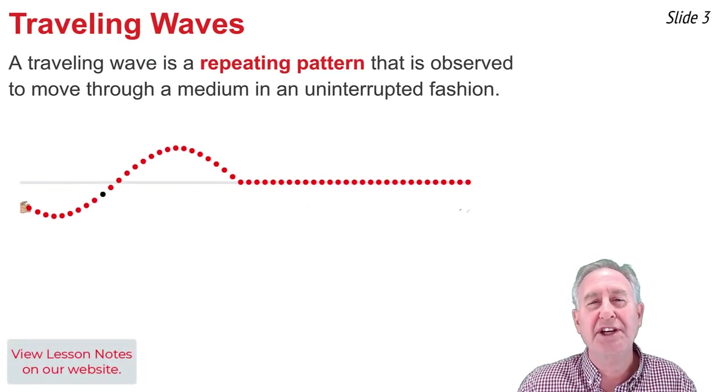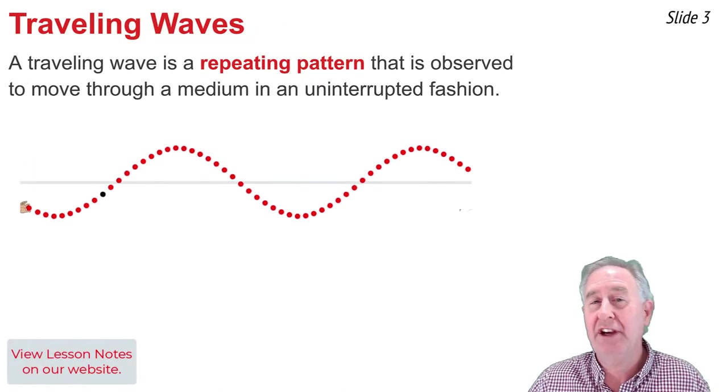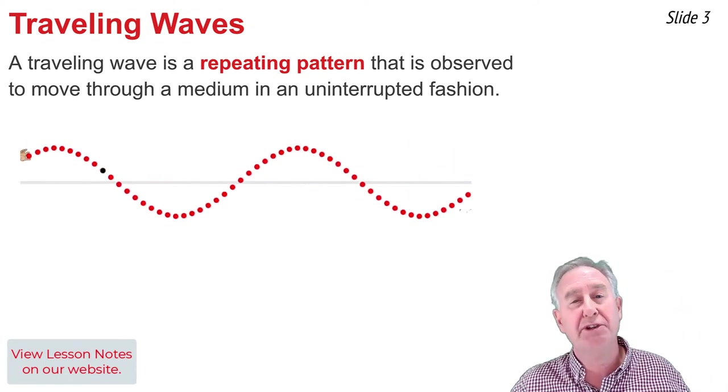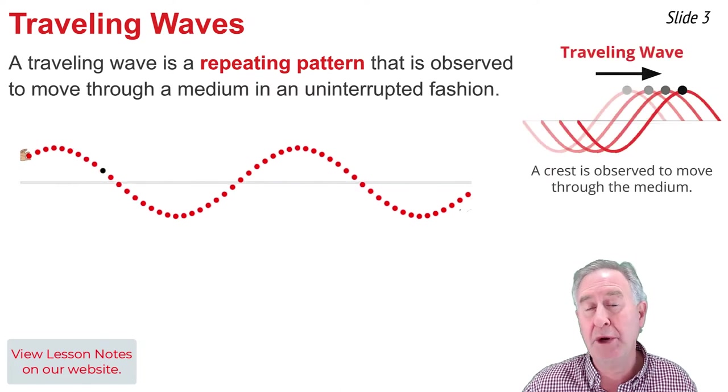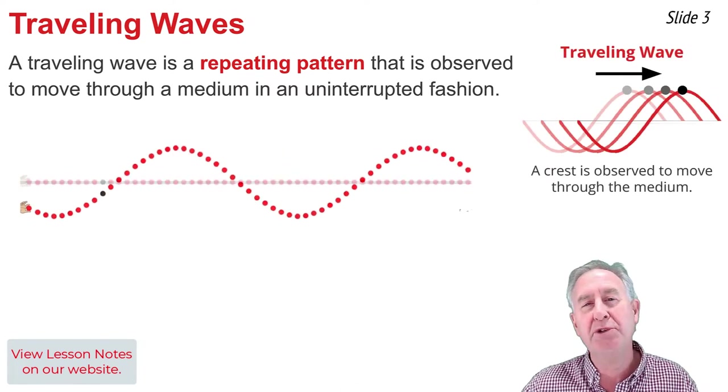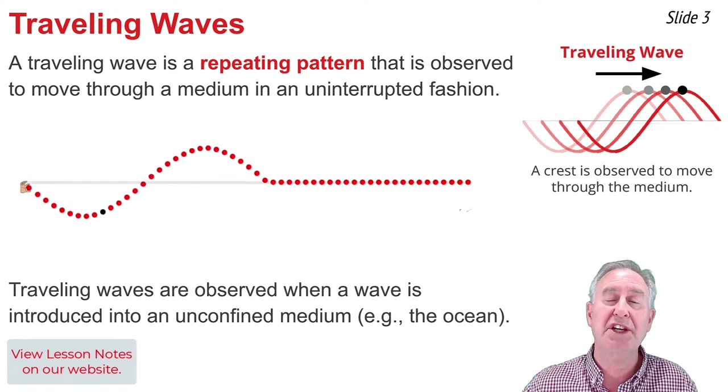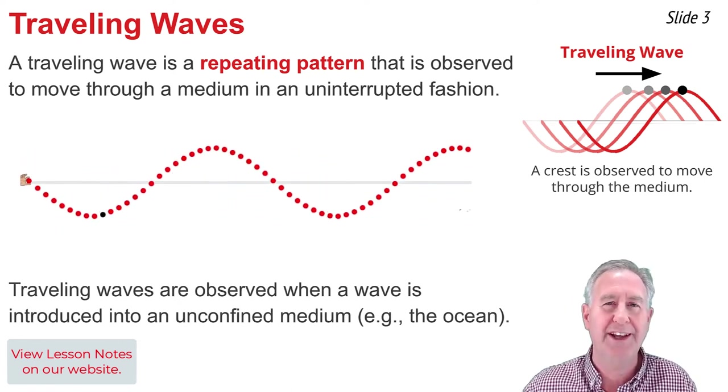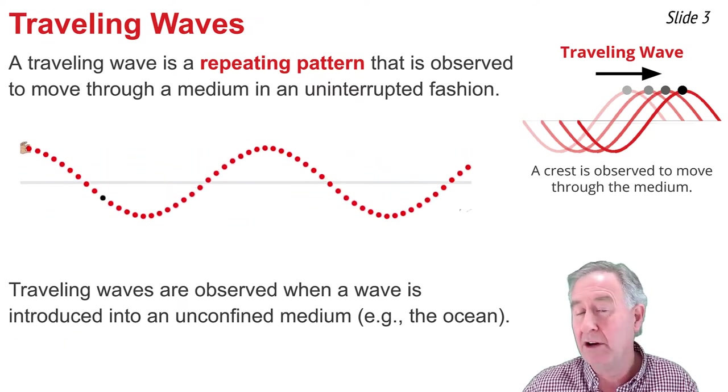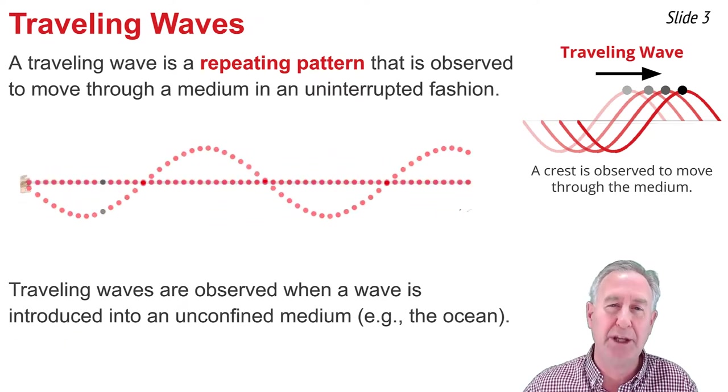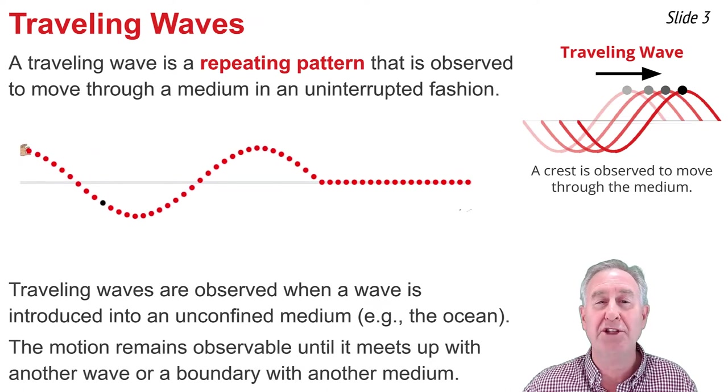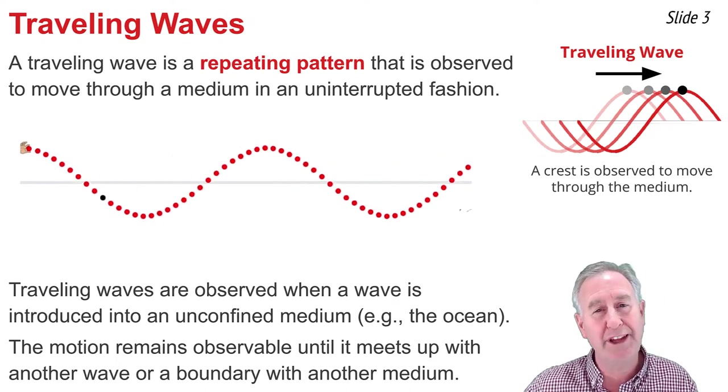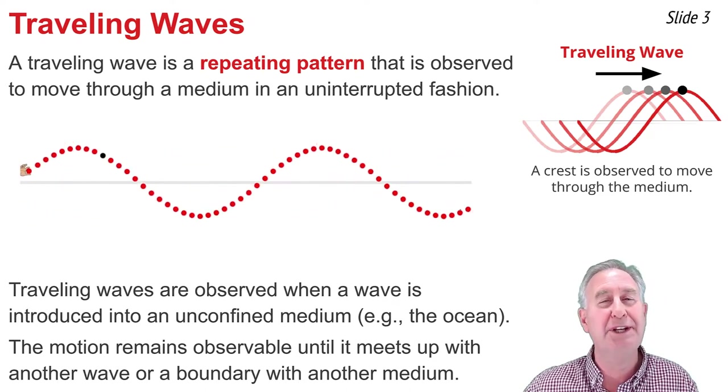When a transverse wave is introduced into a medium, we see a collection of crests and troughs lined up in consecutive fashion. The movement of this pattern of crests and troughs is what we refer to as a traveling wave. You can observe a traveling wave whenever a wave is introduced into an unconfined space, a medium that seems to have no end to it. The motion of an ocean wave across the ocean surface is an example of a traveling wave. This motion remains observable until the traveling wave meets up with an obstacle in its path, with the end of the medium, or with the boundary to another medium.